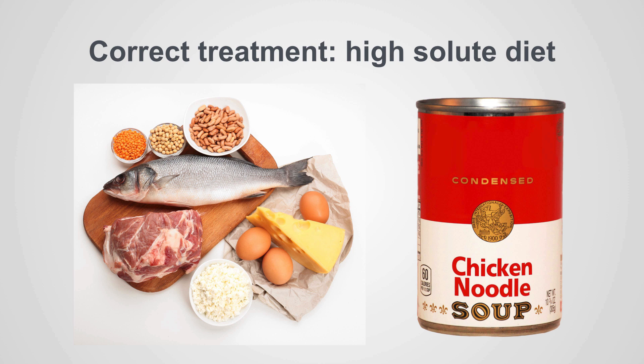The correct treatment is to prescribe a high-solute diet — one that is high in protein and high in minerals. High-protein sources include fish, meat, eggs, and cheese. A high-sodium, high-mineral diet — for example, soup — is an excellent source. These are the things that will correct the hyponatremia and prevent the next episode.